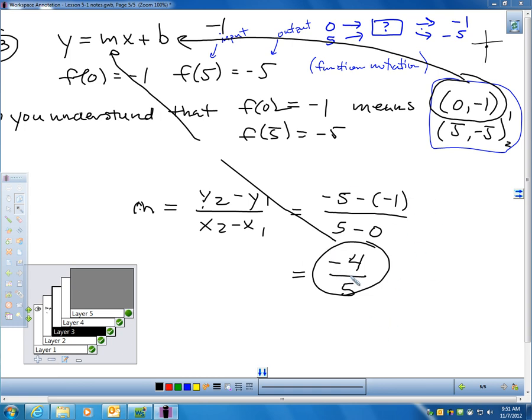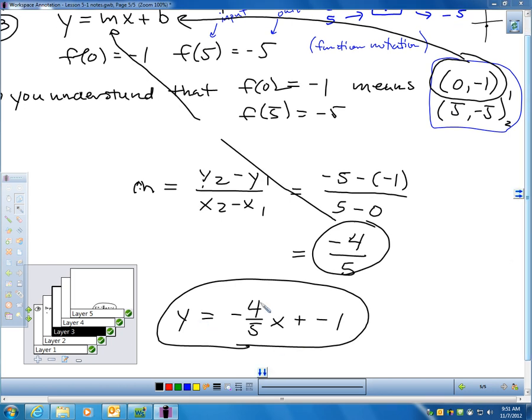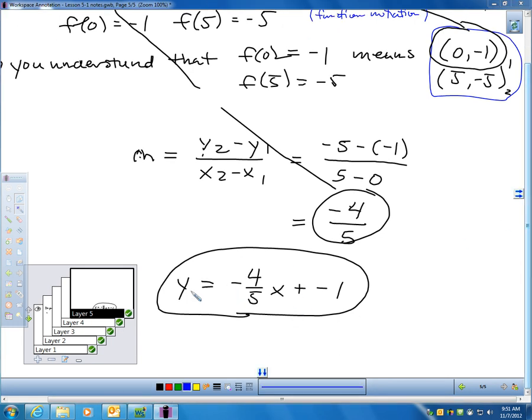And my slope is negative 4/5. So, my y-intercept is negative 1. My slope is negative 4/5, which means my equation is y equals negative 4/5 x plus negative 1. Or, I guess I could even write it a little better than that. This is fine. I would accept this as a correct answer. But, y equals negative 4/5 x minus 1. I think that would even be considered better.